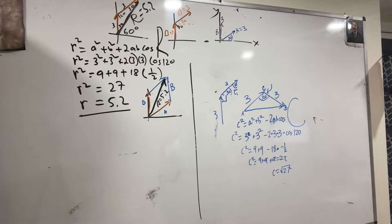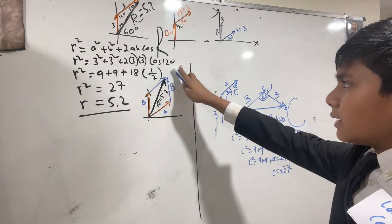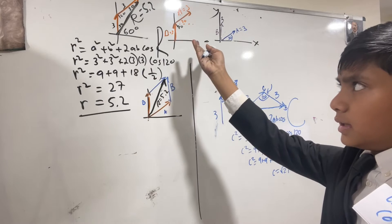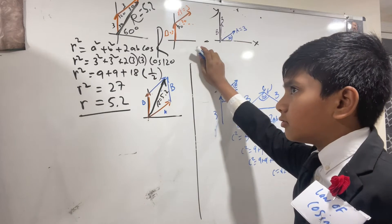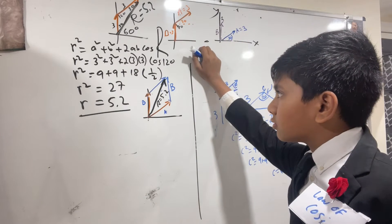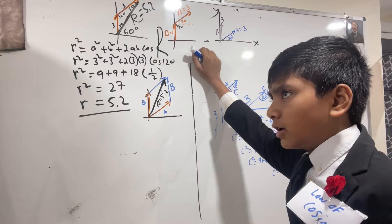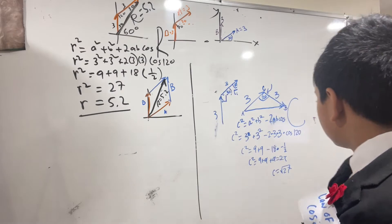Wait a second. Cosine 120 is used as one-half here. Shouldn't that be like sine 30 or something like that? Cosine 120 is one-half. No, it's negative one-half. No, cosine 120 is half.